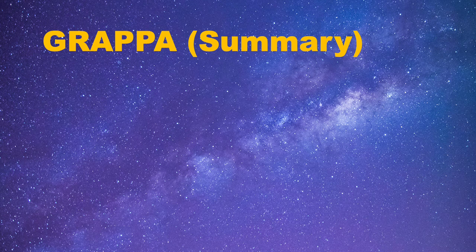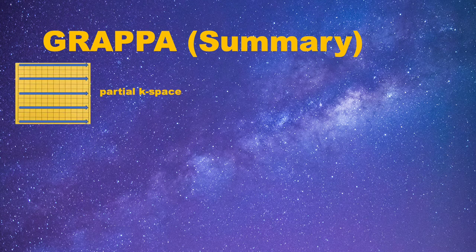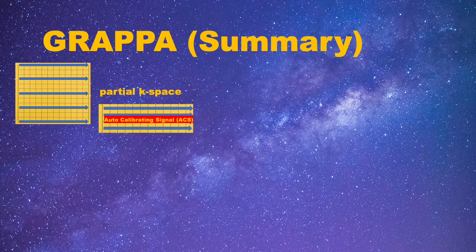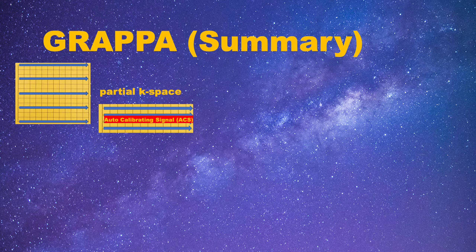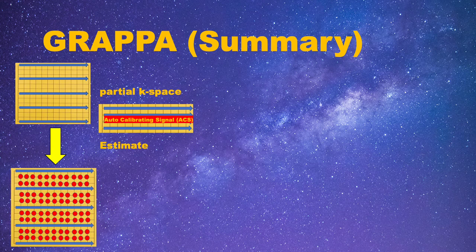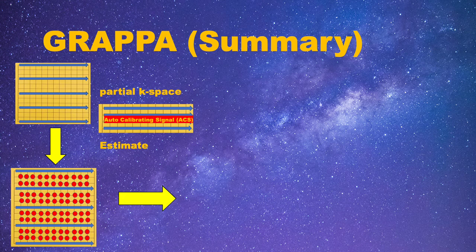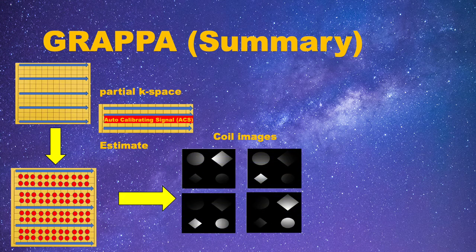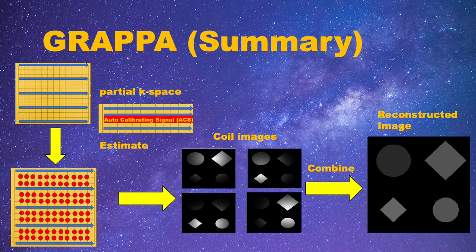Here is a quick summary of the GRAPPA method. Similarly, we first acquire the partial k-space. We need another fully sampled k-space called Auto-Calibration Signal to help us find the rule between existing points and missing points. Then, we use this rule to fill those missing points and estimate the complete k-space. Then, we can reconstruct the non-aliased images for each coil and combine them to get the reconstructed image.